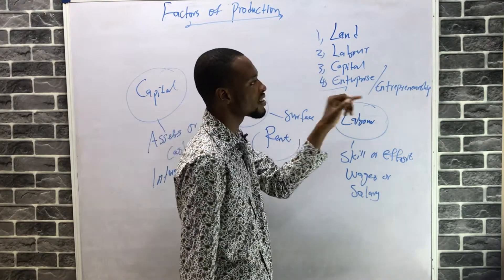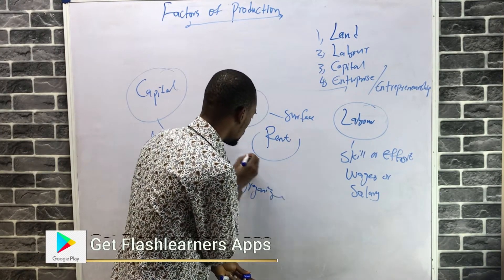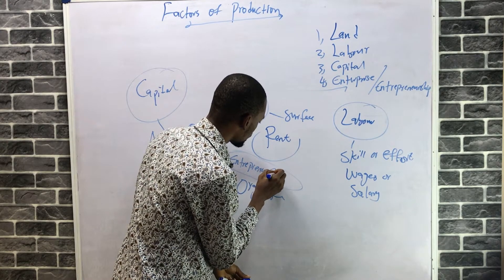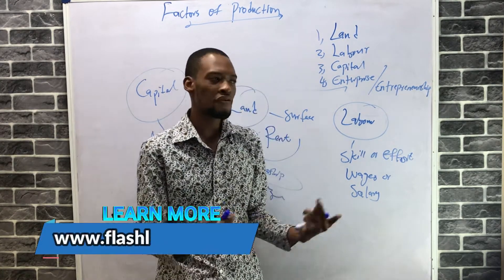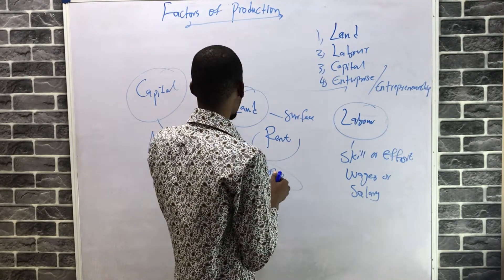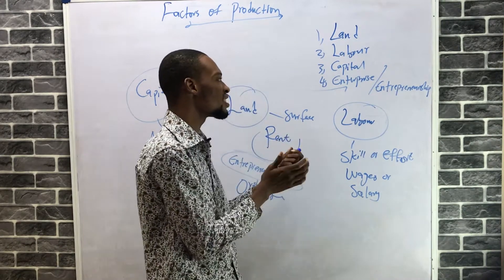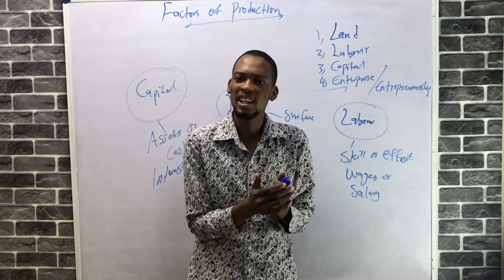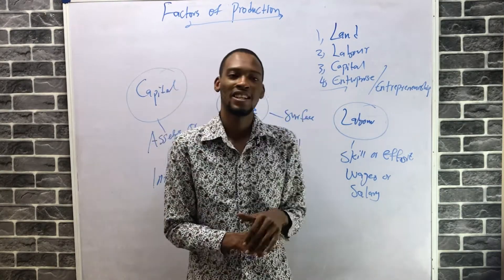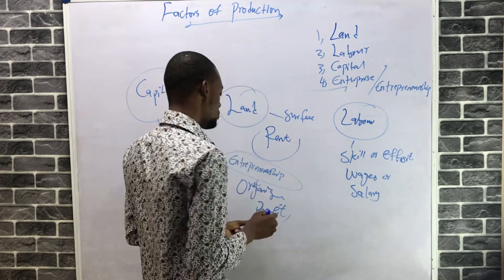The entrepreneur or enterprise organizes and coordinates all the other factors of production to make sure that production is successful. The entrepreneur makes sure land is available, labor is available, and provides capital — coordinating all these things so that all factors are put together for production to be possible. These are the factors of production and their rewards. The reward for entrepreneurship is profit.